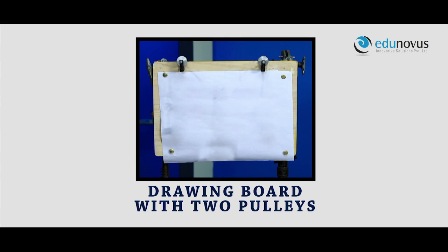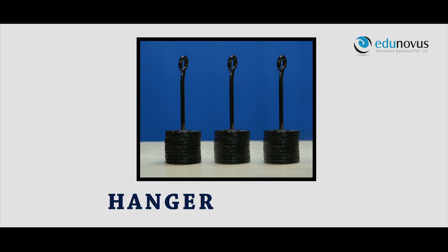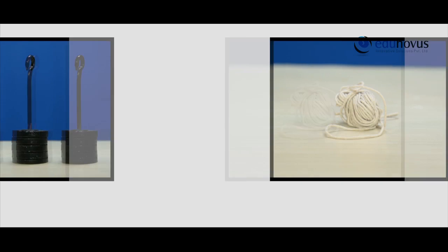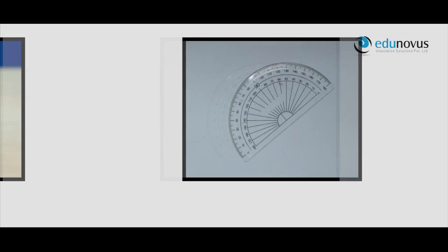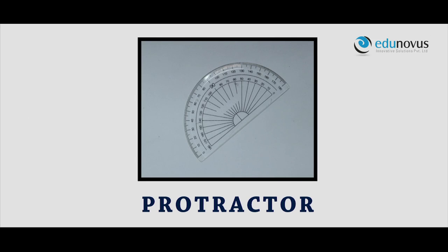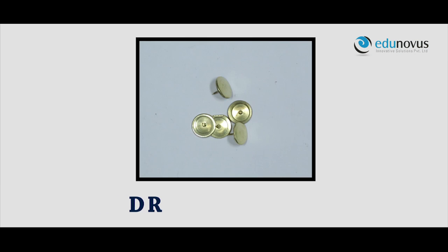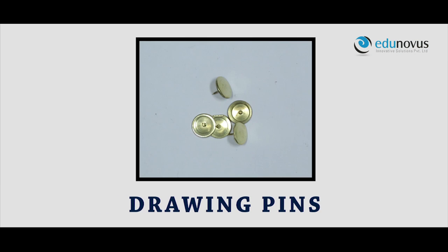Apparatus: Drawing board with two fixed pulleys, three sets of hanger weights, twine thread, protractor, set squares, and drawing pins.